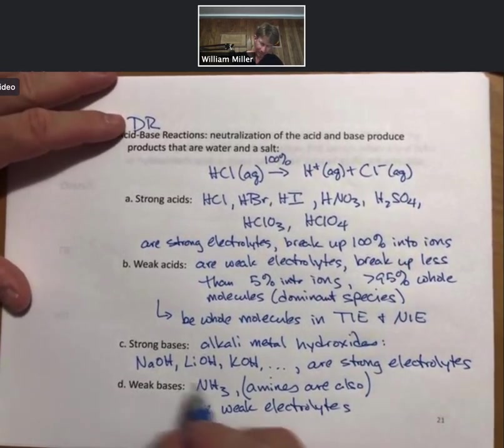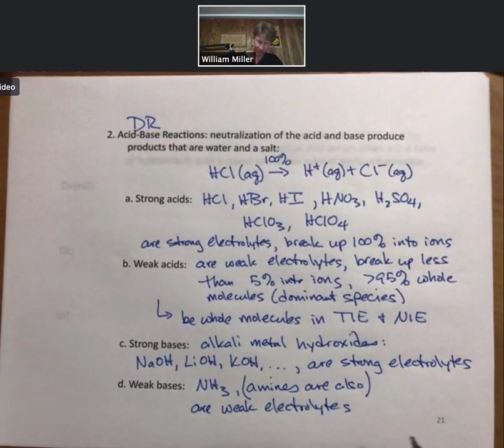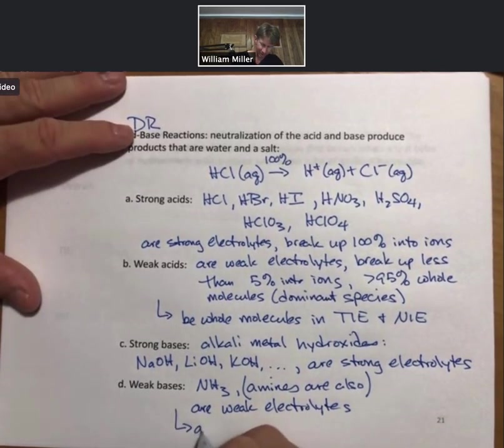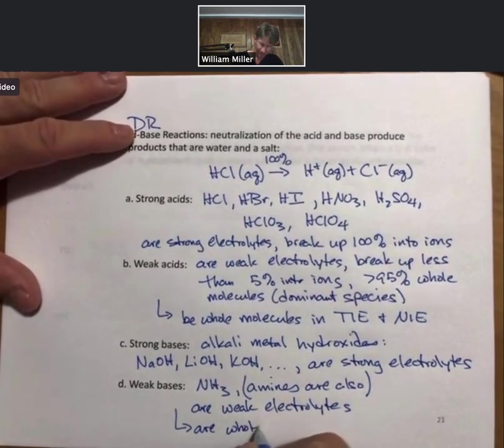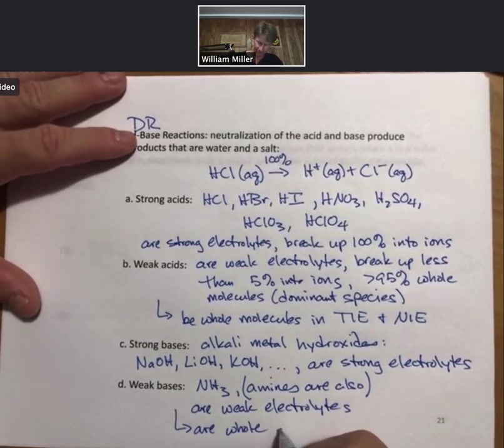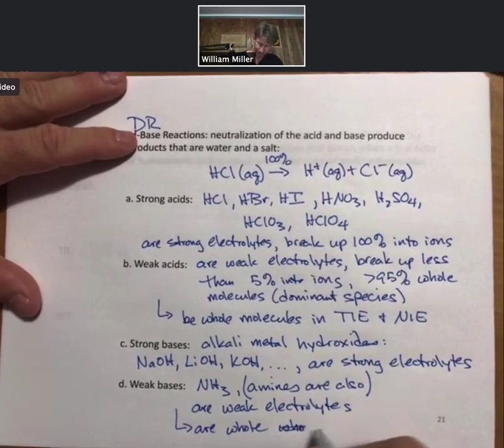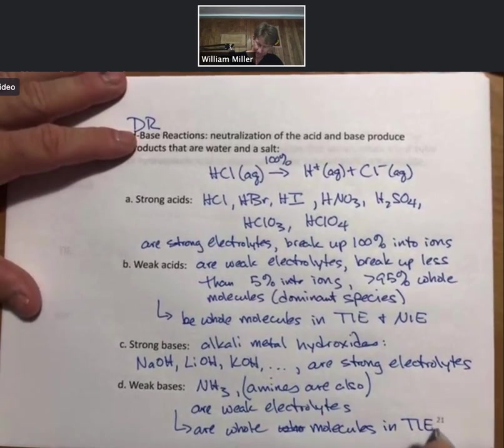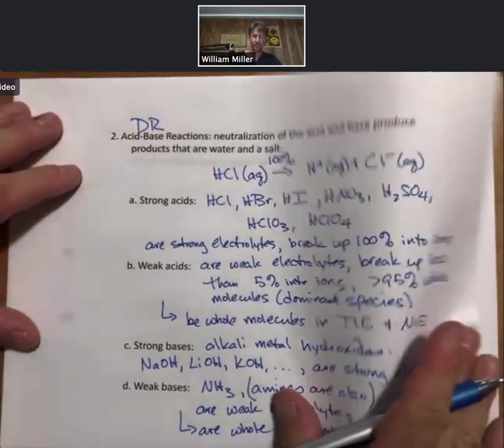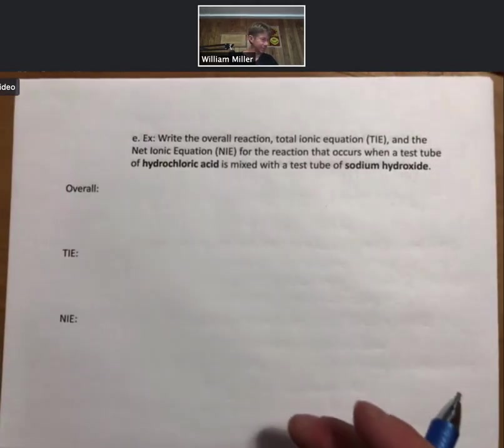But I can just put ammonia on there, NH3, and expect you to know it's a weak base. Weak bases are also weak electrolytes. And weak bases are whole molecules in TIE and NIE. So there are some good definitions we're going to use now.